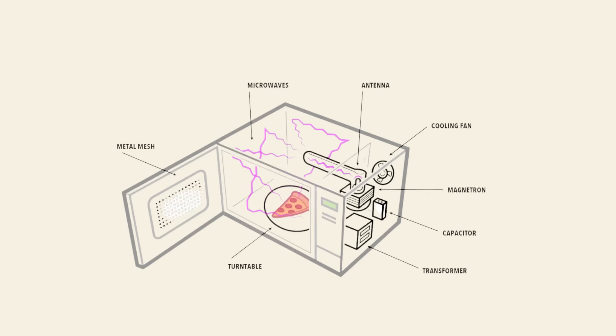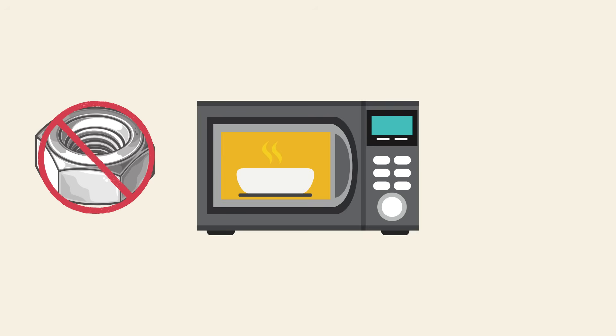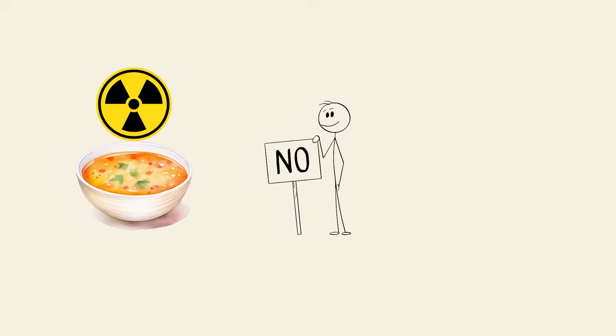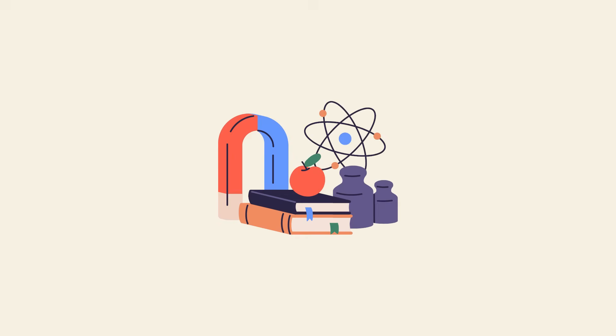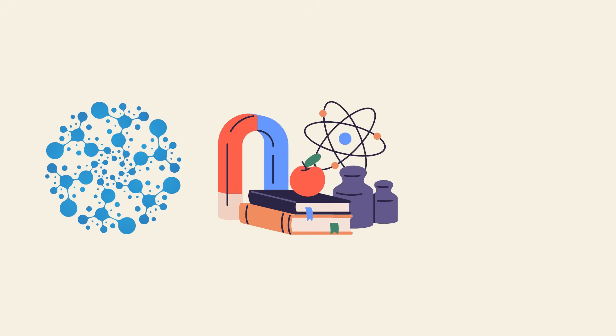The microwave's metal walls reflect the waves, bouncing them around until they hit food, while a rotating turntable helps ensure even heating. That's also why metal is a no-go inside. Metal can reflect the microwaves unpredictably, causing sparks. And no, microwaves don't nuke your food. They don't make it radioactive. They're just using physics to wiggle water molecules fast enough to get things hot.